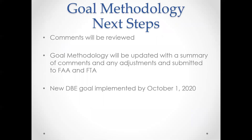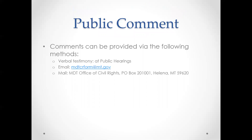That was a quick run through. Everyone has a chance to provide comments, and we'll update the goal methodologies with those and submit to the appropriate federal agency. The goals are supposed to be implemented by October 1st, 2020, though we're not sure what the review timeline looks like during the coronavirus pandemic. We won't implement until we get approval. Comments can be submitted here at the public hearing, by email to the address listed, or by mail to the office.